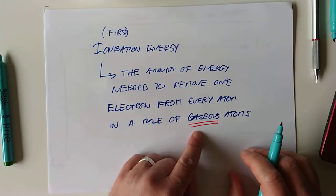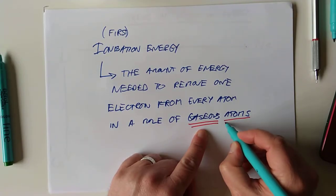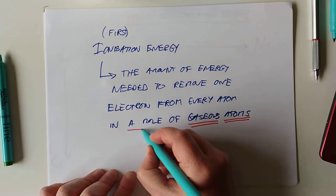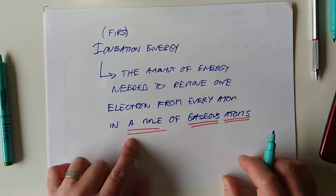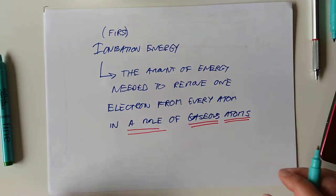You notice it's got to be a gas. So it doesn't apply to anything that's not a gas. It's also atoms, not molecules. So if you see O2, for example, nope. It's got to be individual oxygen atoms. It's got to be a mole of them as well. So not half a mole, not two moles. It's one mole. That is the definition of the first ionization energy.